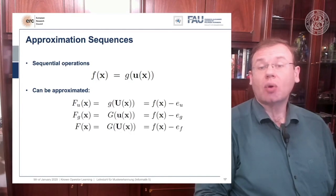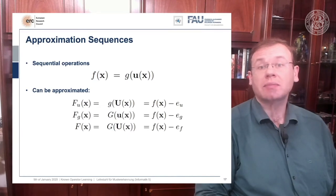We could approximate only G, this would give us f G, or we could approximate both of them. That is then G of U of X, and both are approximations. Now with any of these approximations I'm introducing an error, and the error can be described as EU if I approximate U, as EG if I approximate G, and as EF if I approximate both.